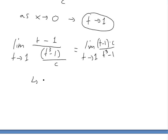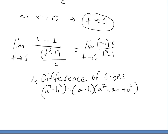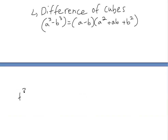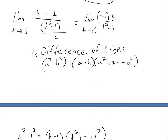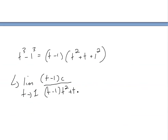Basically, if you have a difference of cubes like a³ - b³, that equals (a - b)(a² + ab + b²). You can see more on this in the video link below. The reason we're doing this is to cancel out the (t - 1) factor. So t³ - 1 factors as (t - 1)(t² + t + 1), since 1 can be seen as 1 cubed. We've now used the difference of cubes in the denominator.